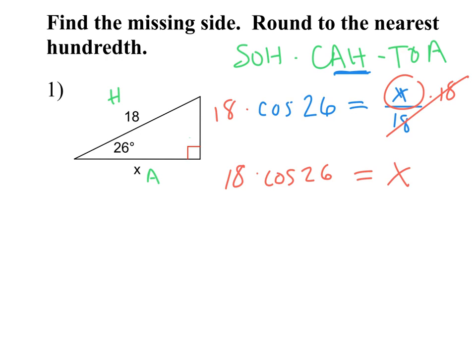You've already solved for x, so you're done with the algebra. We just want a nice numerical answer, so we go to the calculator. The calculator has that decimal stored inside it. Cosine of 26° is that ratio — if you were to draw a right triangle to scale with a 26° angle, the adjacent and hypotenuse are always in the same ratio, which is a constant decimal your calculator knows.